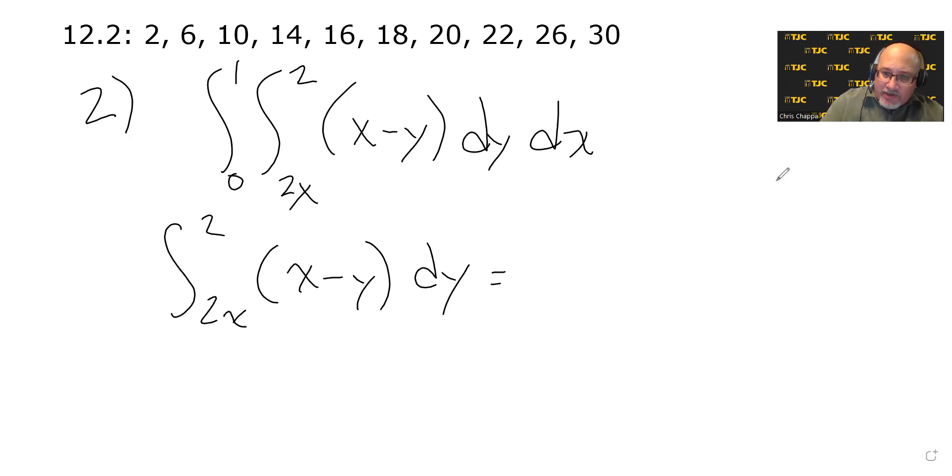The antiderivative of x is x times y, but the antiderivative of minus y is minus 1 half y squared, and this is being evaluated from y equals 2x to y equals 2.